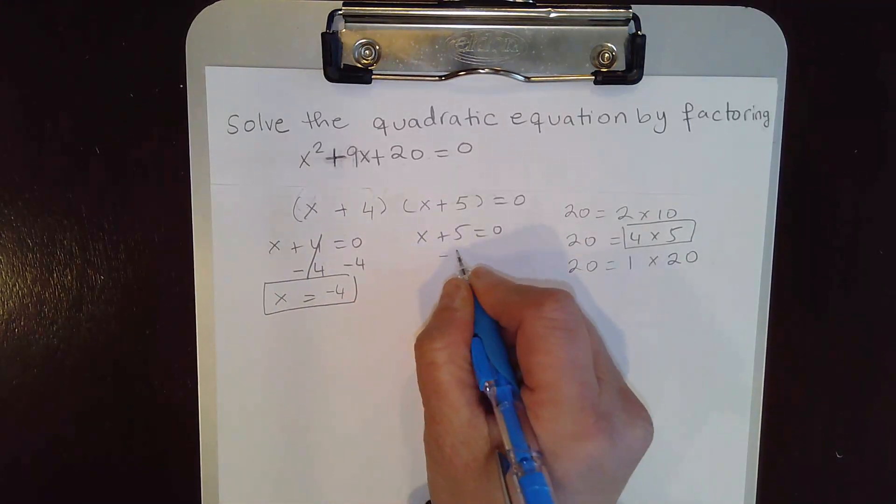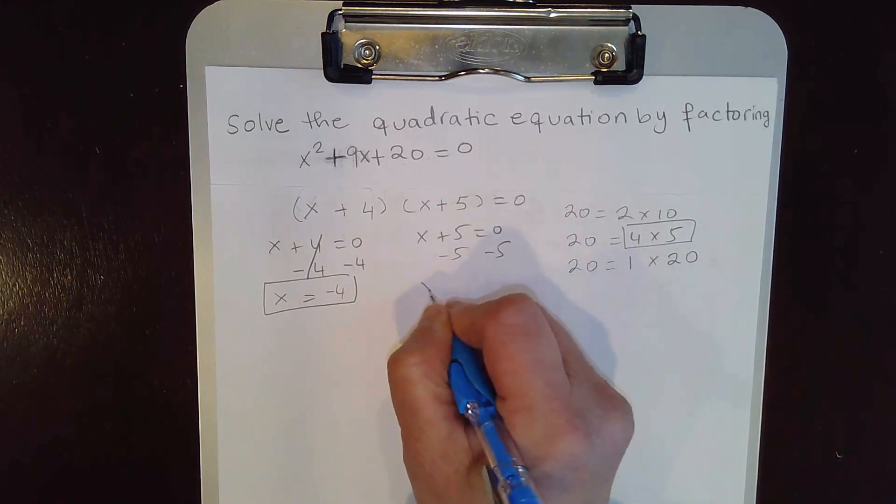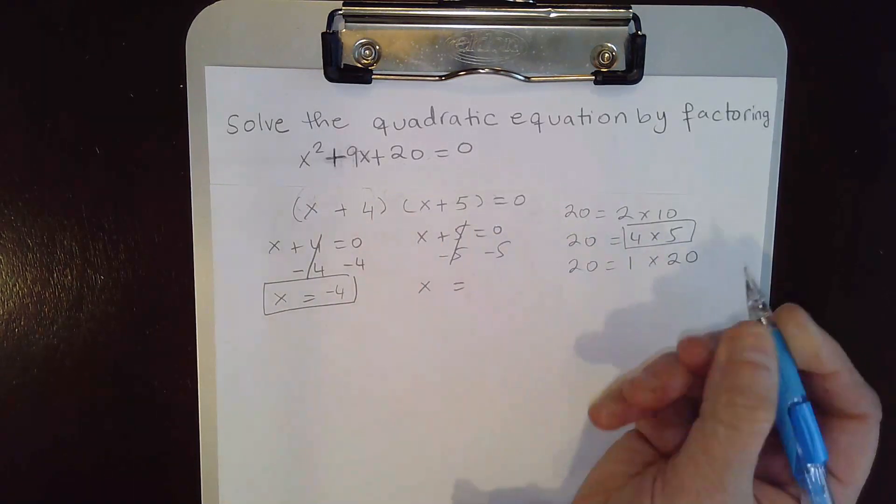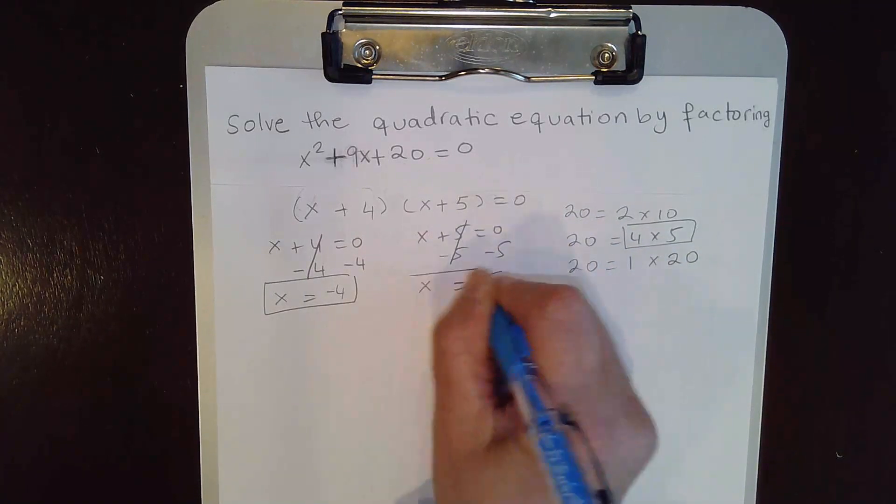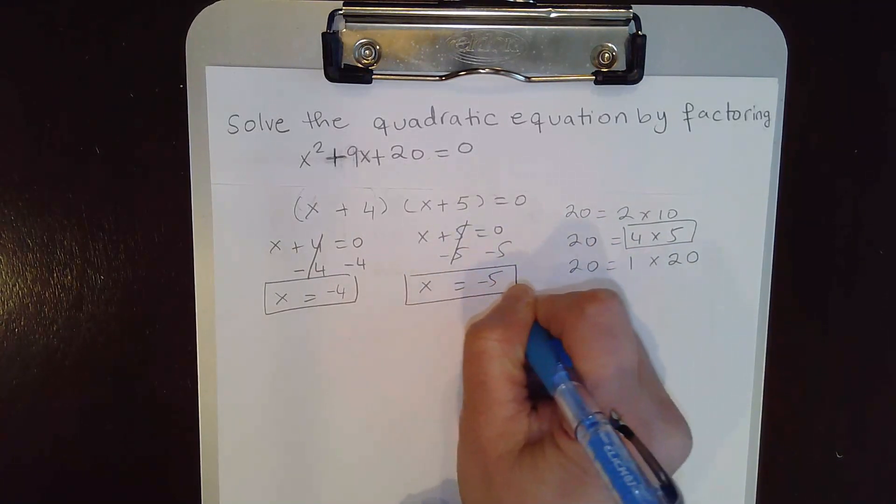Here we subtract 5 on both sides. We get x equals negative 5. The solutions are negative 4 and negative 5.